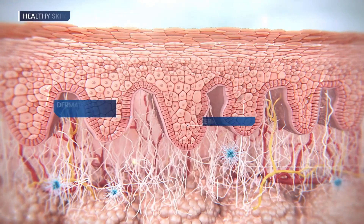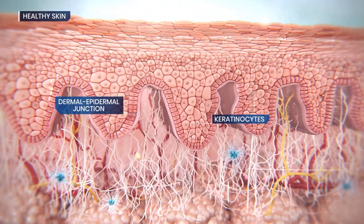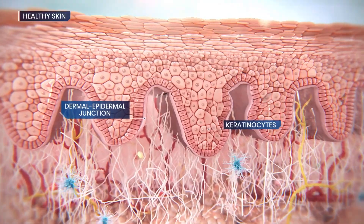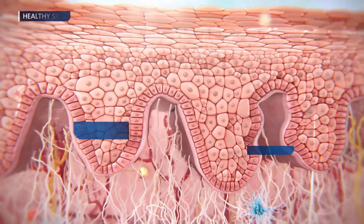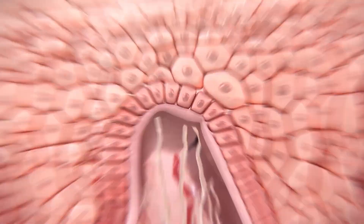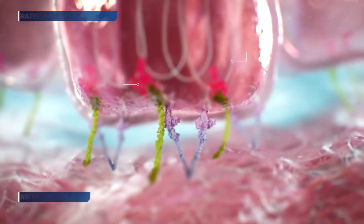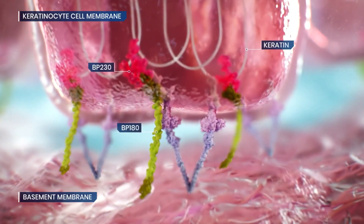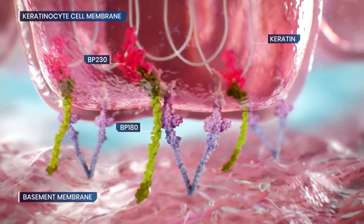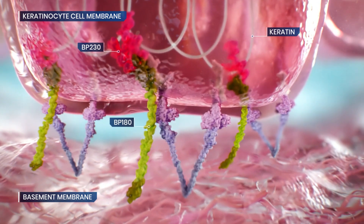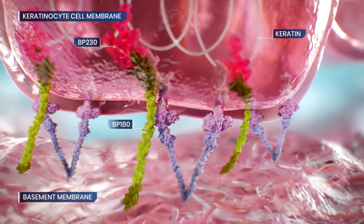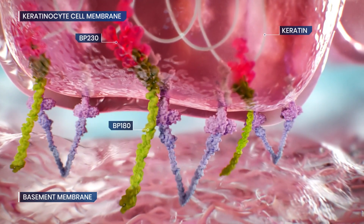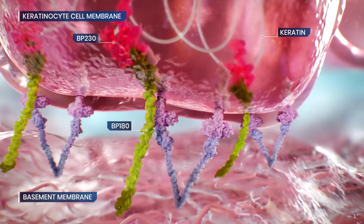In healthy skin, keratinocyte attachment to the dermal-epidermal junction is maintained by specialized hemidesmosomal proteins, including BP-180 and BP-230.